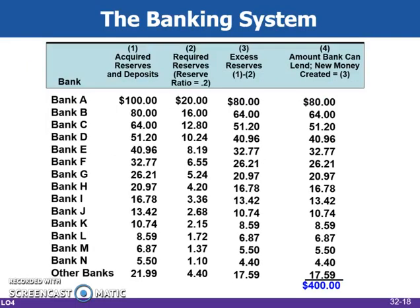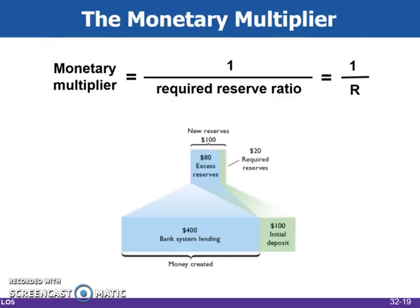This shows that in total, the original $100 deposit will end up adding $400 in new money into the system. The money multiplier — not to be confused with the multiplier effect — is a key measure in banking that helps to predict the money supply that will be available to drive economic growth.